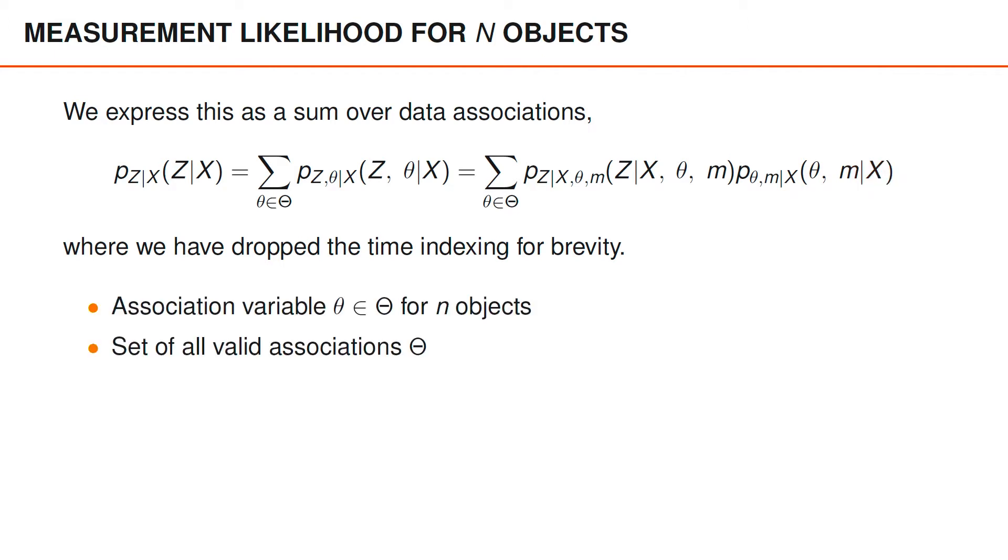To derive this measurement likelihood for N objects, we need to define the data association variable Theta for N objects, and we also need to have a look at what the set of valid associations, capital Theta, is.